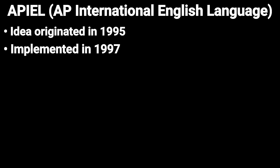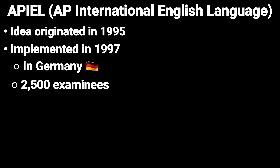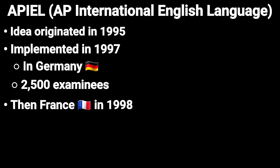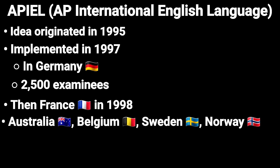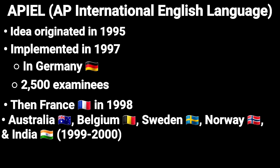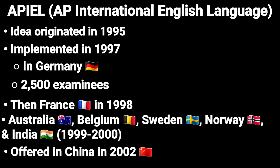Number 2: AP International English Language. The AP IEL, or APL examination, was conceived in 1995 and first implemented in 1997. It was first tested in Germany in 1997 with about 2,500 examinees. The examination was also tested in France in the second year, and further extended to Australia, Belgium, Sweden, Norway, and India in 1999 and 2000. The test was offered in China in 2002 for the first time.